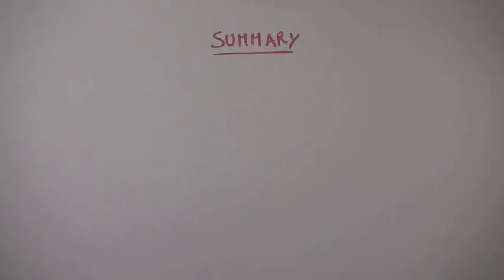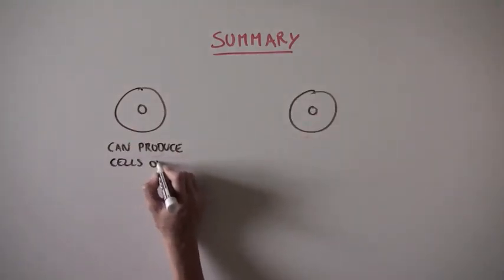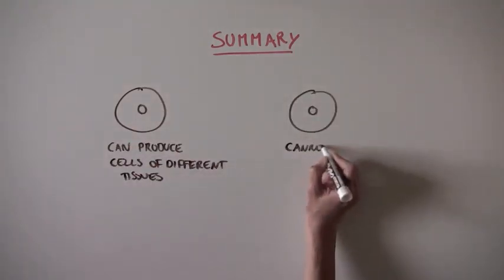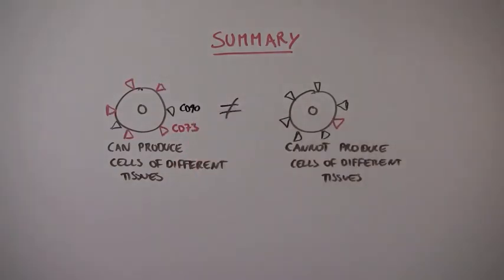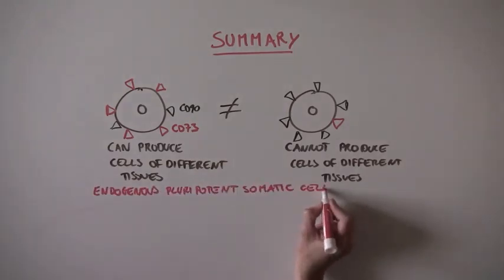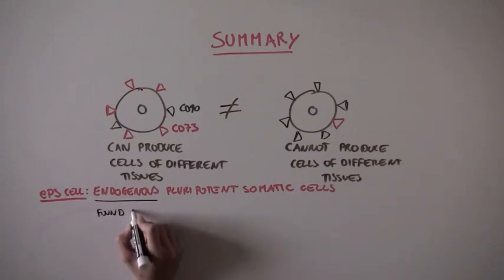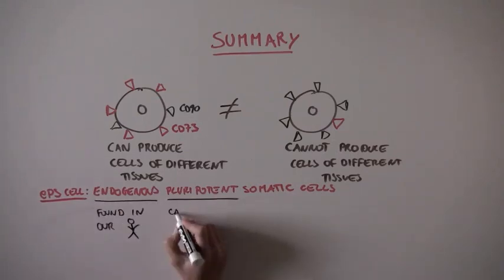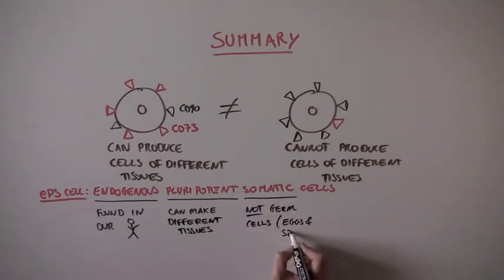So what did this study show? This study found two markers that could differentiate a cell that has the ability to make different tissues from a cell that does not. High CD73 and low CD90. The scientists call these cells endogenous pluripotent somatic cells, or EPS cells, which just means that they are found in our bodies, that they have the ability to make different tissues, and that they are not germ cells, which are eggs and sperm.